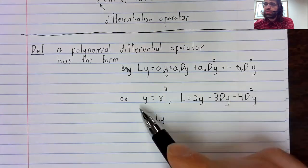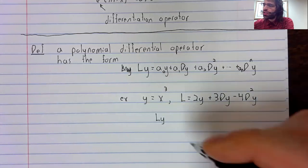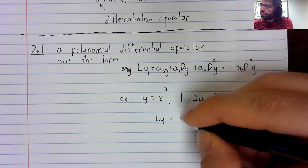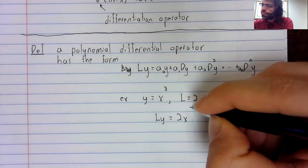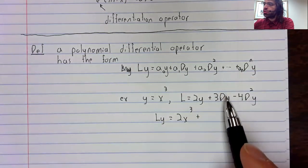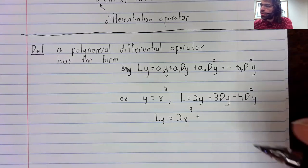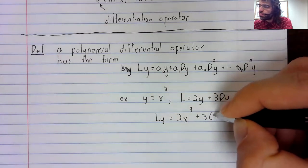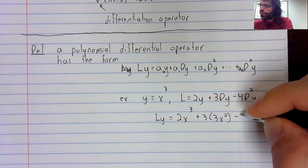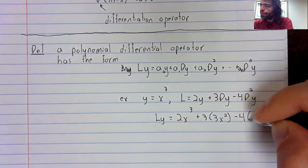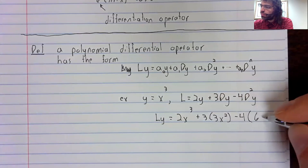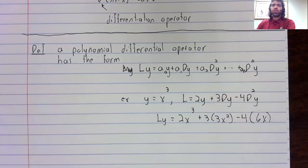Then L applied to this function is twice the function plus 3 times the derivative of the function minus 4 times the second derivative of the function.